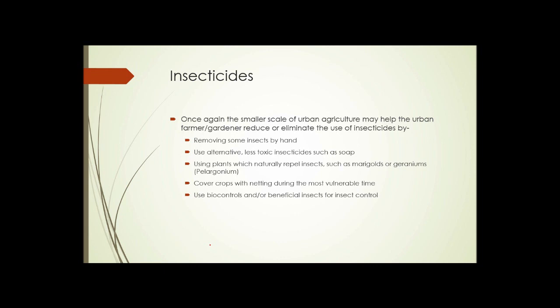Using plants that naturally repel insects, such as marigolds or geraniums or petunias. It may be possible to cover crops with netting during their most vulnerable time and simply physically block the insects from getting to the plant, or the use of biocontrol and beneficial insects for insect control.